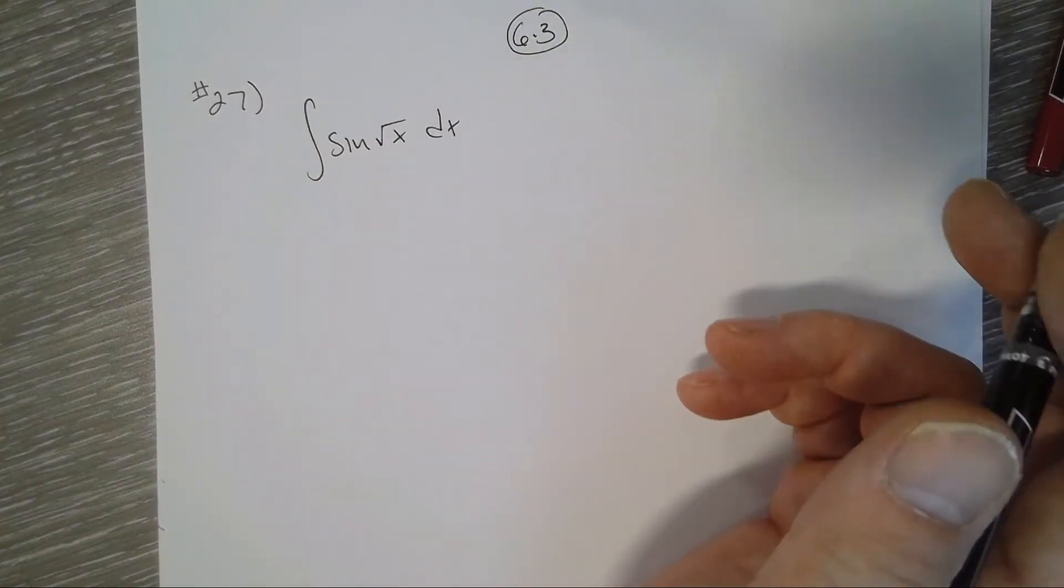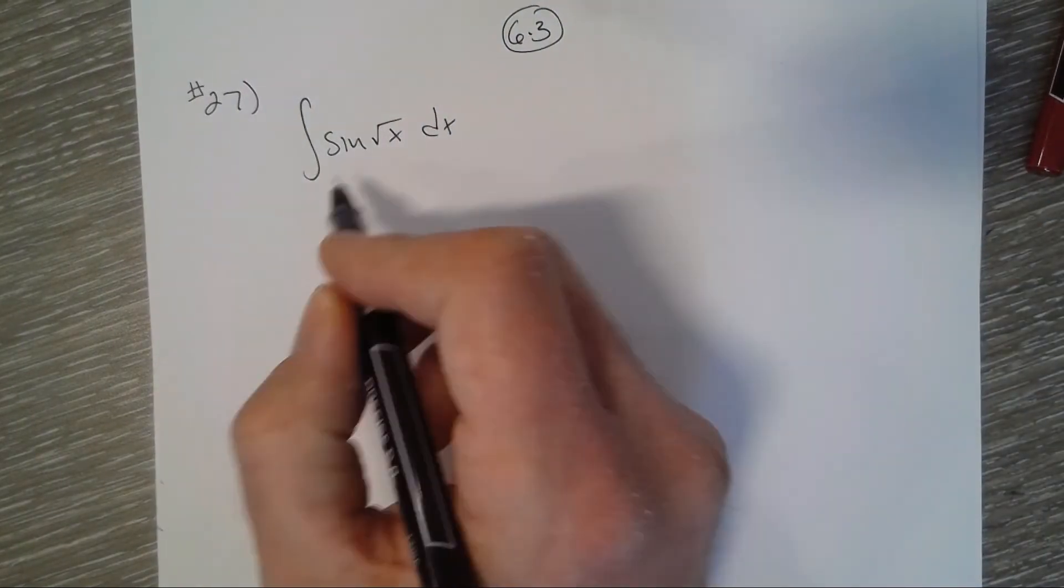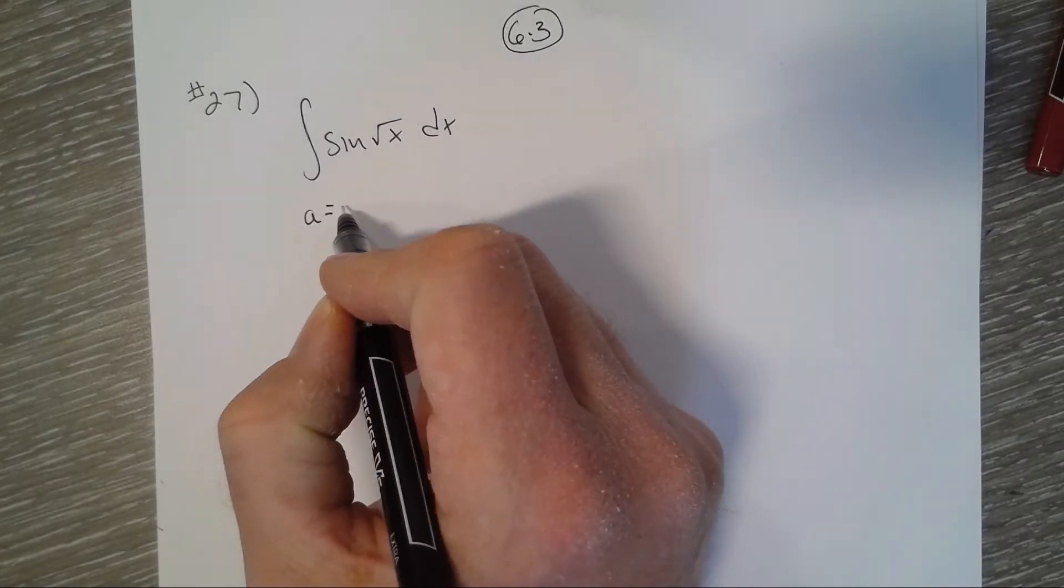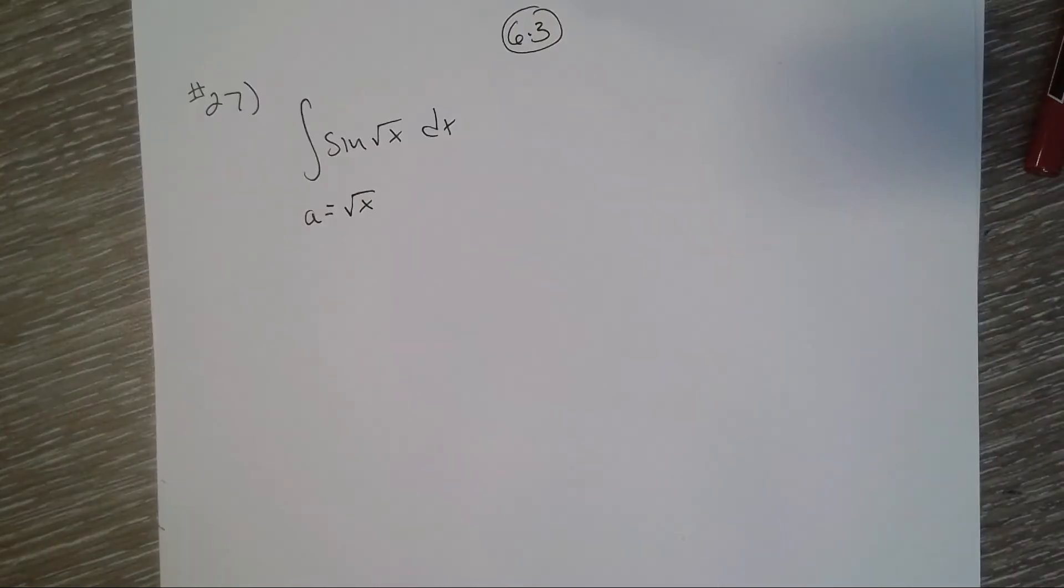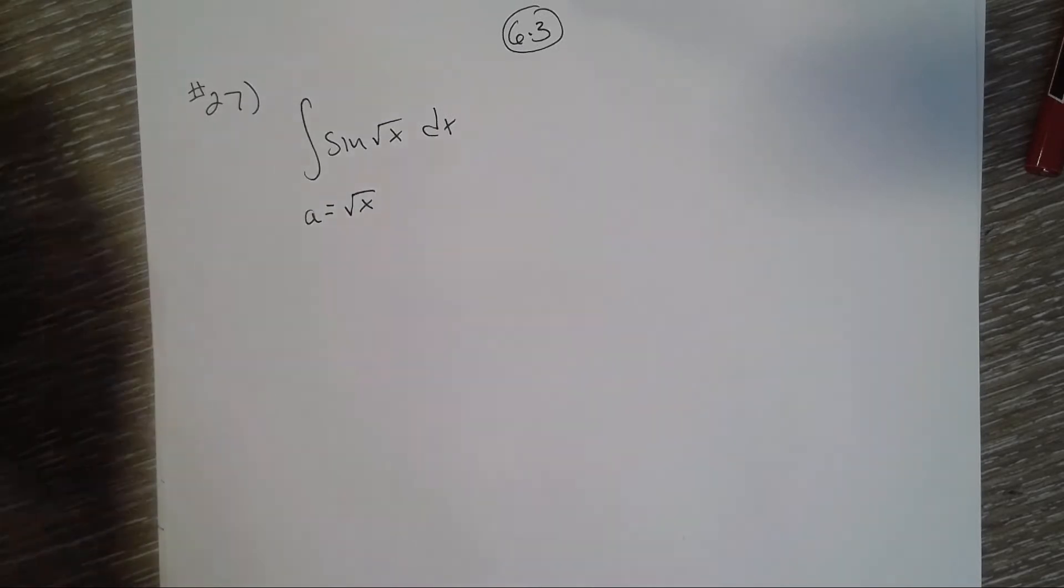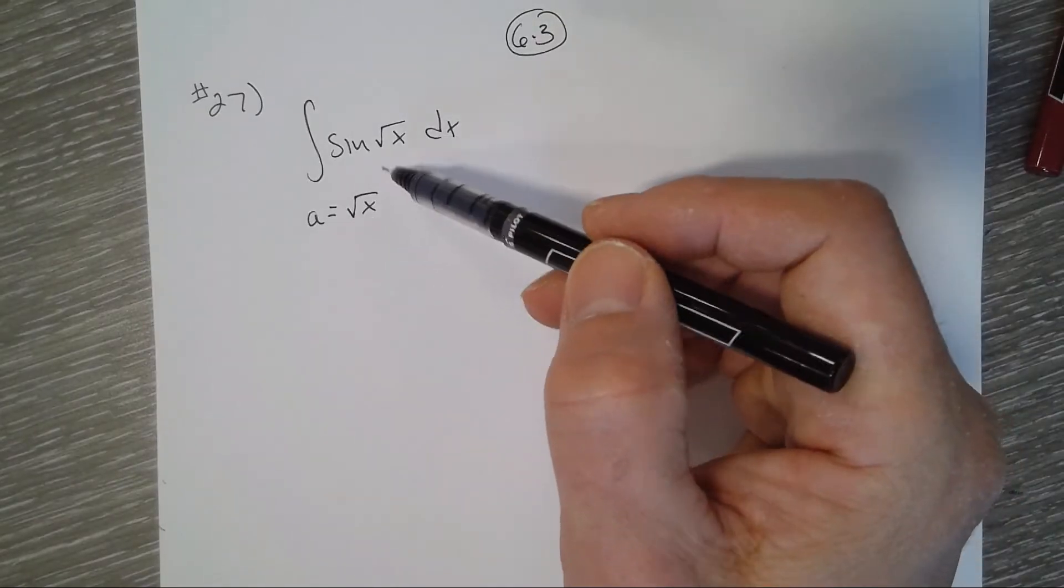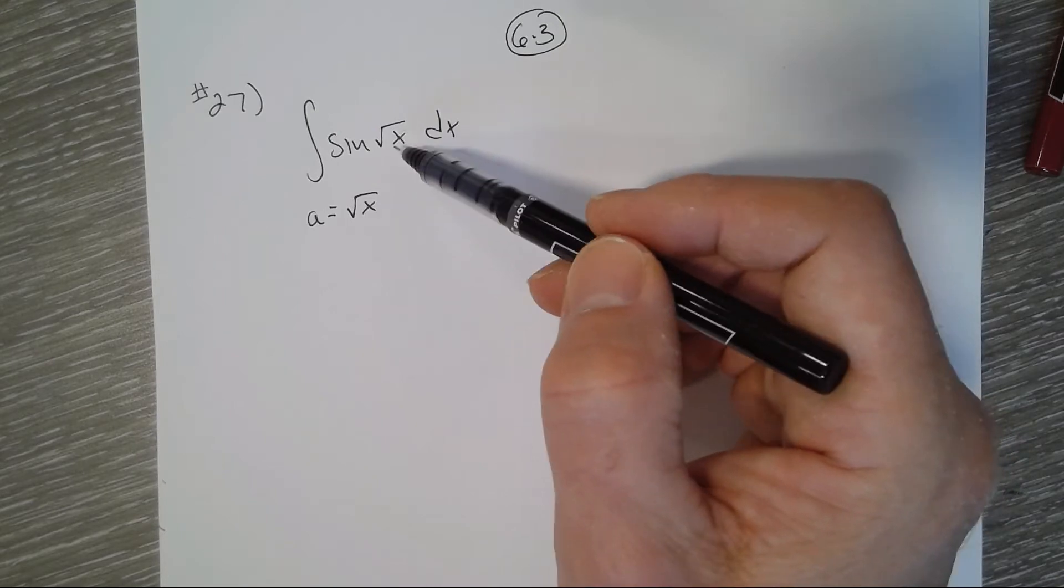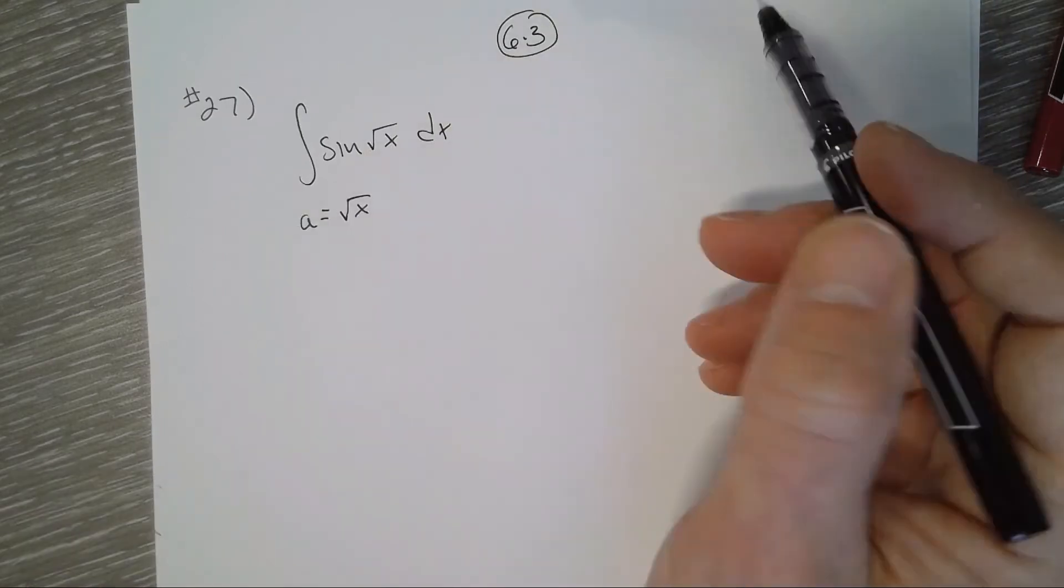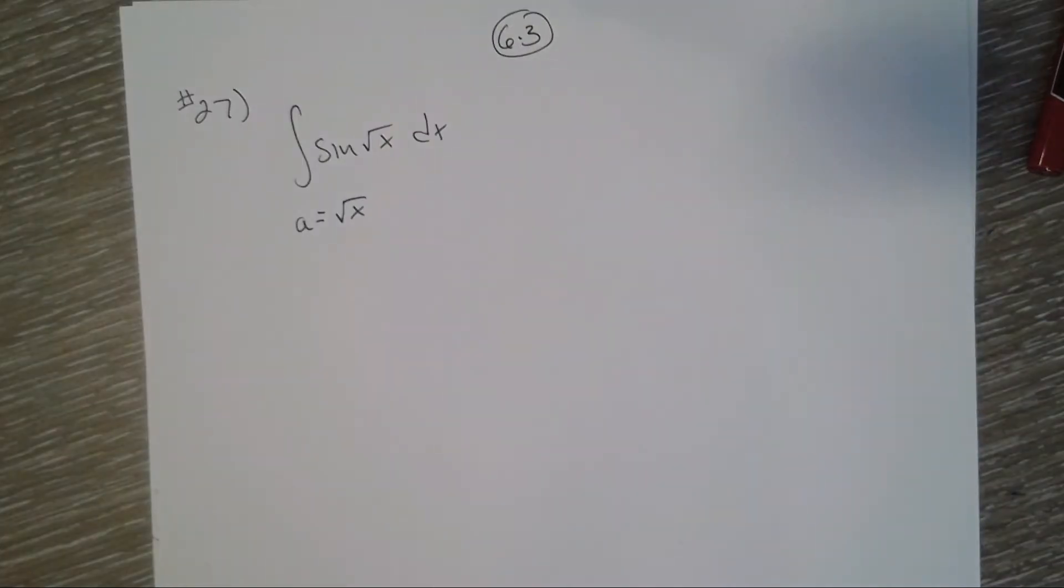So it's not always obvious in u-substitution what to choose, and we don't necessarily know if this is going to help just by choosing this as our u, or in this case a. But the instructions do say to do that.